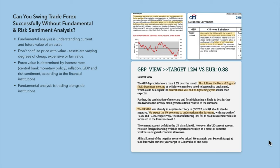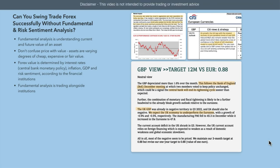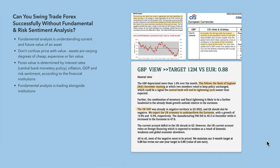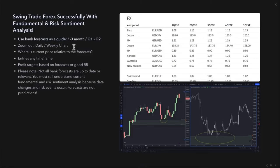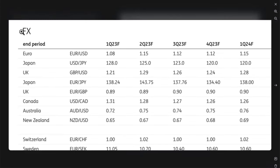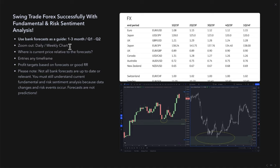There is definitely something missing in your trading if swing trading isn't working as expected, and it is fundamental analysis. One of the ways to use the banks' fundamental analysis as a shortcut is to use bank forecasts as a guiding light. Many banks publish their monthly and quarterly forecasts, which are constantly updated. Use a one-to-three month time horizon, or maybe a quarter to two quarters, as your guide.